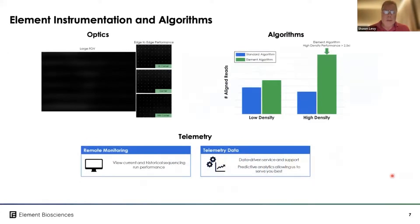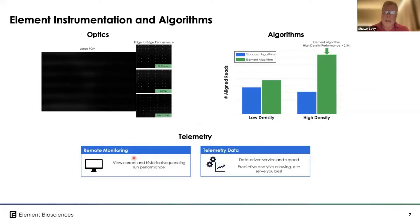One of the other differentiating features is a very large field of view in the optics, which enables very strong edge-to-edge performance. You can see the uniformity in these control flow cells. All algorithms for spot finding and high-density performance are developed in-house, allowing that flexibility out to 1.3 billion reads. Finally, the instrument has a strong telemetry system to allow remote monitoring of current and historical sequencing performance, as well as collection of telemetry data for record keeping and predictive analytics that allow us to observe when an instrument may need service proactively.